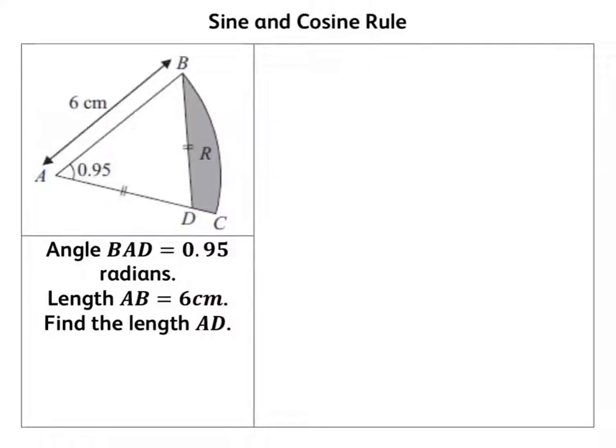We're looking at the sine and cosine rule here, working in radians. Radians is just another measure of angles. The thing you've got to remember is that 360 degrees is 2π radians. When you use radians on your calculator, make sure you've got R. Remember that 180 is π radians.